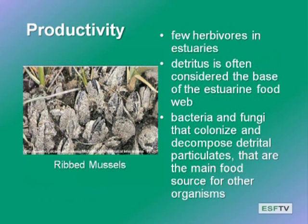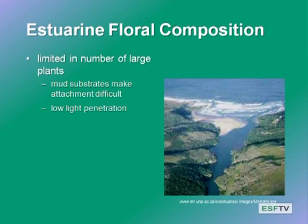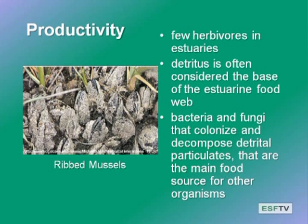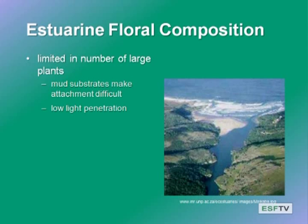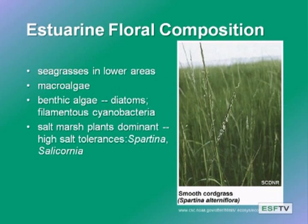There aren't that many herbivores, which makes sense because there aren't that many plants actually in the estuary itself. Detritus is generally considered the base of the estuarine food web. Bacterial and fungal production and colonization is very important in converting all that detritus into other sources of energy. You get filter-feeding organisms that can persist on detritus, such as ribbed mussels. There are a limited number of large plants — often seagrasses near shore that depend on adequate light. There are often problems with attaching in anoxic muds and low light penetration. Some seagrasses, fringing salt marshes with Spartina, a few benthic algae like diatoms, some filamentous cyanobacteria. The productivity of these things is generally low.